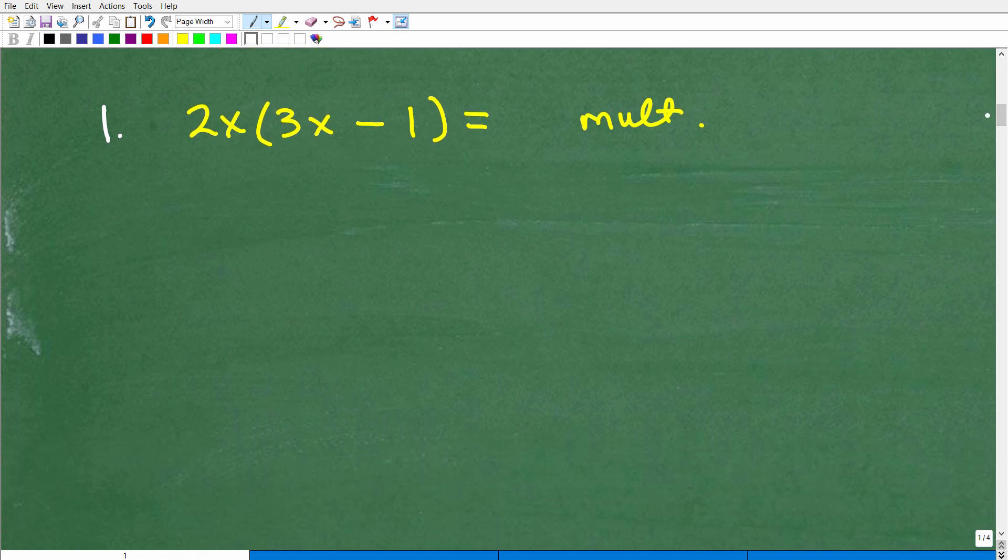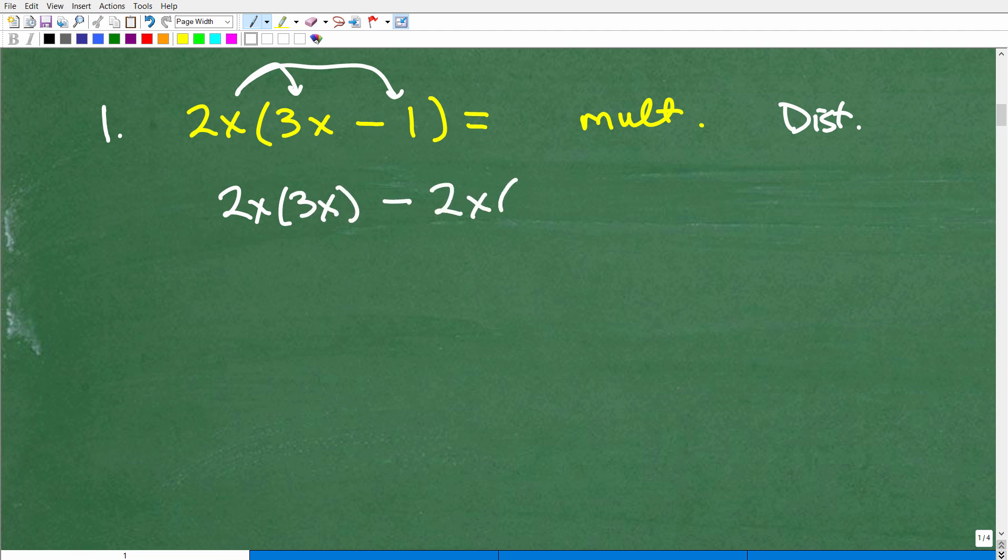And we're going to start with our first problem. Okay, so 2x times 3x minus 1. How do we do this problem? Well, this is an illustration of the distributive property. Basically, I'm seeing if you understand the distributive property, it's super easy. All we're going to do is take this 2x. We're going to multiply it by 3x. I'm going to take this 2x. I'm going to multiply it by 1. So if I really want to be fancy about it, I can go like this. 2x times 3x minus 2x times that 1 right there. Okay, so 2x times 3x is 6x squared minus 2x times 1, of course, is 2x. And this is the answer.